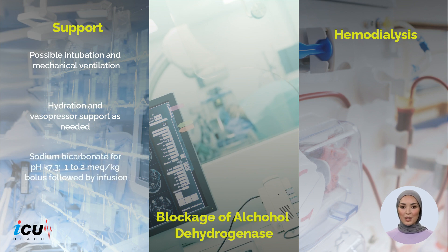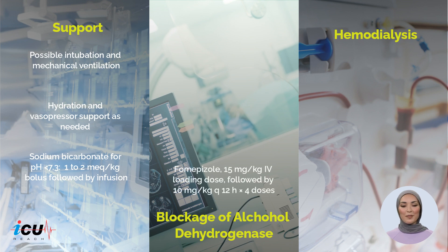Bicarbonate at 1-2 mEq/kg IV bolus followed by infusion should be used if the pH is below 7.3. Alcohol dehydrogenase can be blocked with fomepizole, 15 mg/kg as a loading dose, followed by 10 mg/kg every 12 hours for 4 doses.